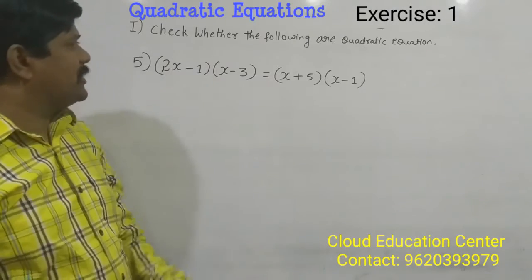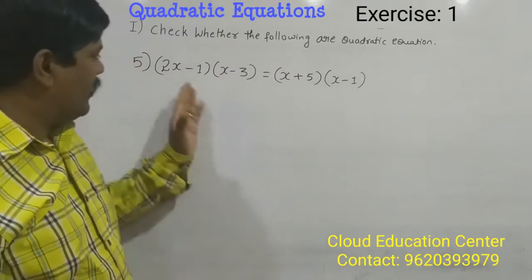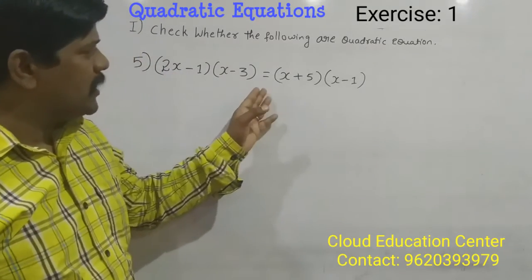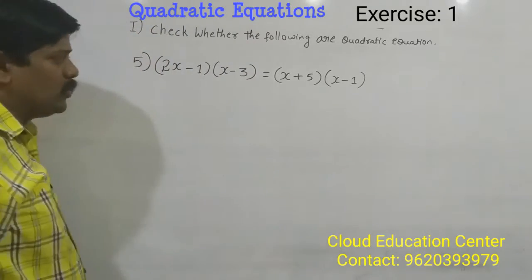Hi students, here we are asking to check whether the following are quadratic equation and the equation is given 2x minus 1 into x minus 3 is equal to x plus 5 into x minus 1. How to do?